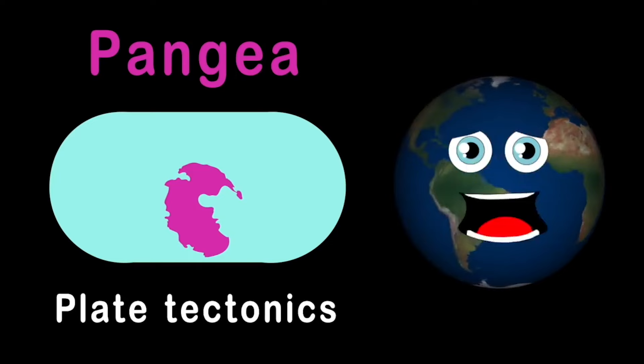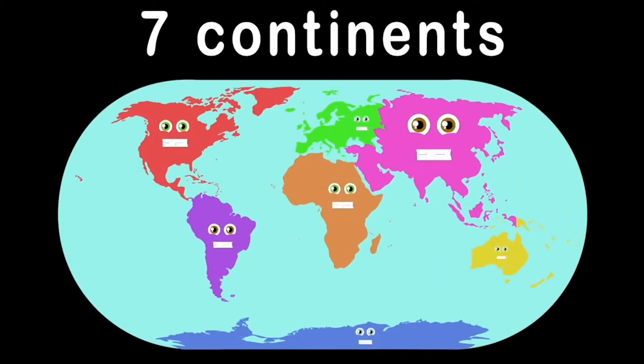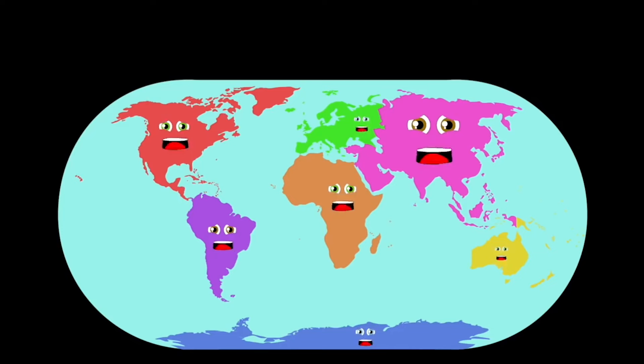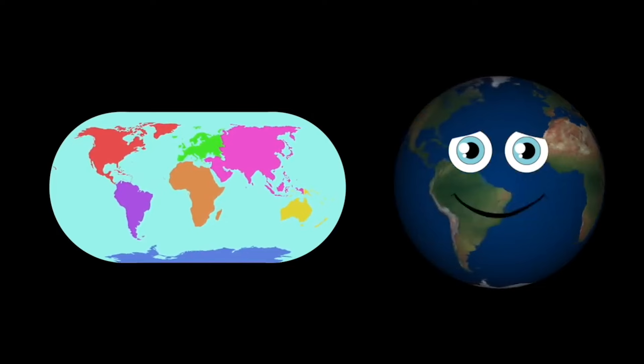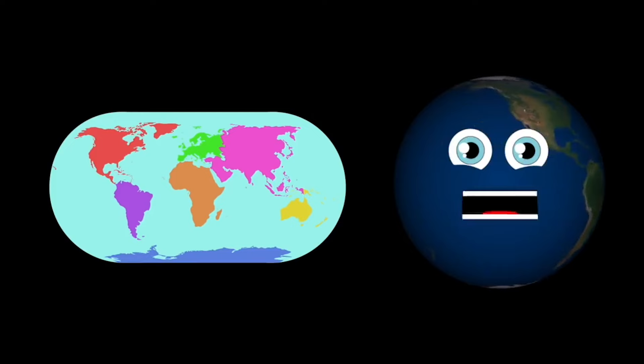Most of Pangea sat in the southern hemisphere, surrounded by an ocean called Panthalassa. 200 to 175 million years ago is when the supercontinent started to break up. This break-up is now explained by plate tectonics rather than Wegener's concept of continental drift. We are the seven continents of the world you live on. Let's learn about the continents together as one. Over 175 million years, our tectonic plates started to break up into the seven continents that exist today.